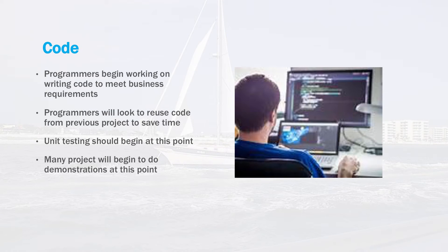This is perhaps the most well-known phase of the software development lifecycle — the coding phase. In this phase, programmers will begin to write code to map out all the functionality of the system. Programmers will look to reuse code they've developed on previous projects to save time. In addition, programmers will also develop unit tests to ensure the code meets basic functionality requirements. Many projects will also begin to do demonstrations to customers at this point to make sure there are no surprises in the end product. The earlier problems can be found in the SDLC process, the cheaper and easier they are to fix. Once code goes into production, fixing bugs and missed requirements can be very expensive.